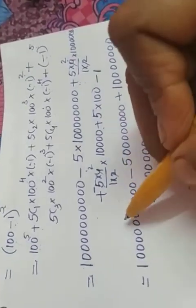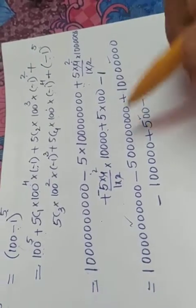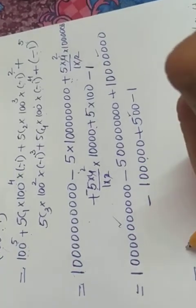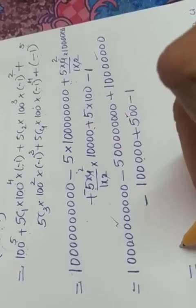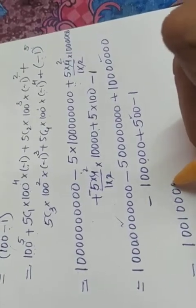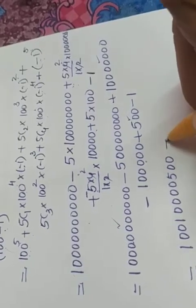So we can add the positive terms. This term, this term and 500 and all the negative terms together we have to add and just subtract. So if we add these 3 positive terms, we are getting 10,010,000,500 minus...